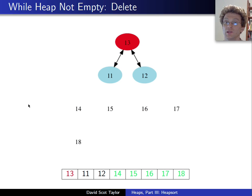So, 13 I'm deleting. Swap it with the 12. Compare 12 to 11. It looks good. Now I want to delete the 12. I swap it with the 11. Bring the 11 up. Now the 11 is a valid heap.